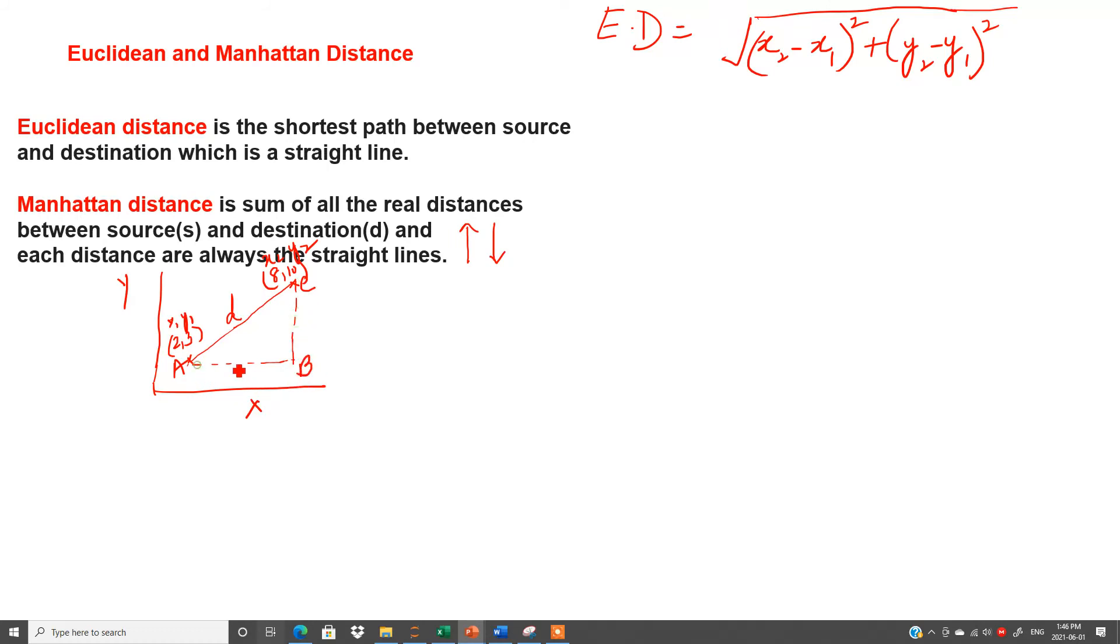So this one, this is my B point, this distance we have to find out from A to C. So I will prove this formula with the help of Pythagoras theorem.